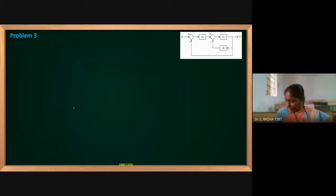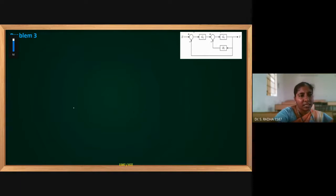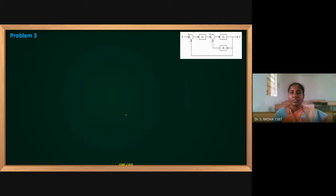The transfer function can be derived. You can see here G1, G2, H1 — these are the three gains present in the diagram. These are the three block gains.